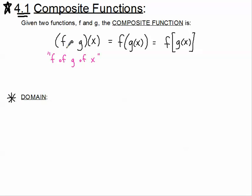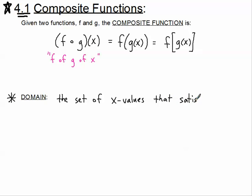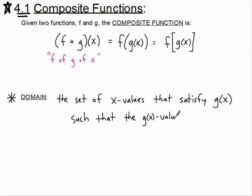When we're talking about a composition of functions like f of g of x, the first thing we're talking about is g of x, and then we're talking about f of g of x. So we have two different things happening with our domain. Our domain is the set of x values that satisfy g of x first, such that the g of x values would also satisfy f of x.